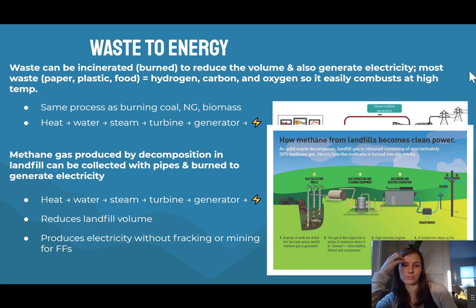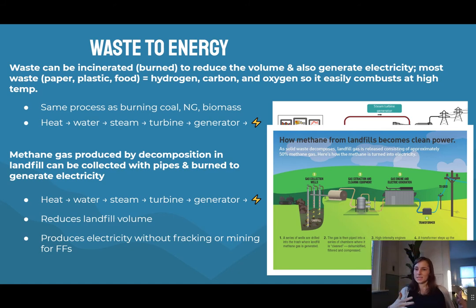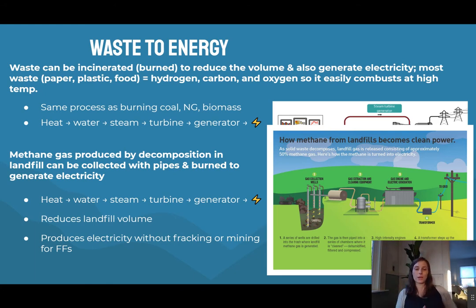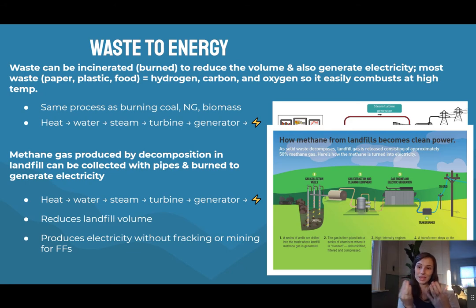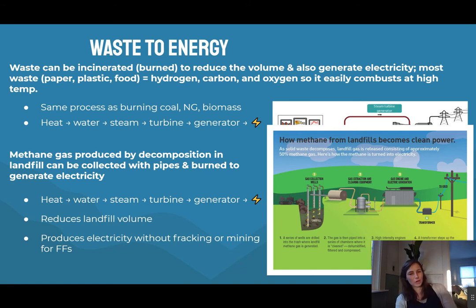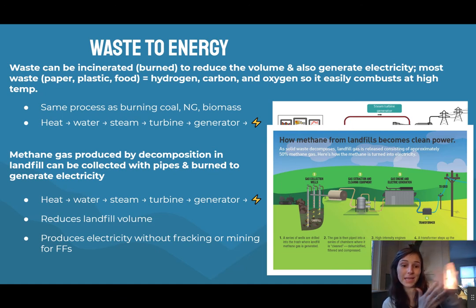Now, waste to energy is the idea that waste can be burned to reduce volume and also generate electricity. Most things we throw away can combust at high temperatures, using the same process from unit six: burning creates heat, which heats water, makes steam, spins a turbine, and a generator produces electricity. You're just using the heat from burning the waste.